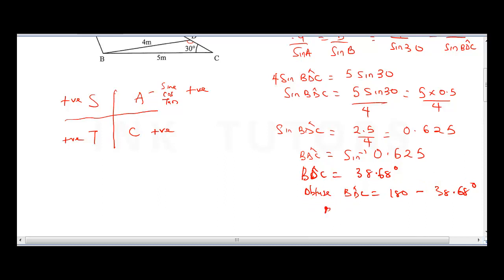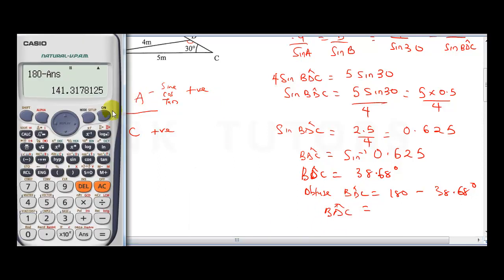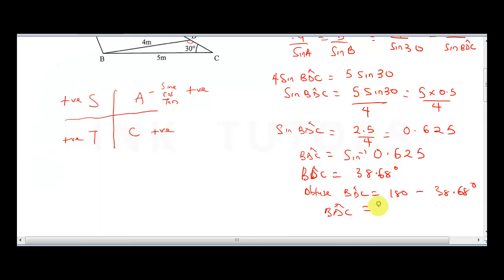Our final answer for BDC: we perform 180 minus 38.68, which gives us 141.32 degrees. So the answer is 141.32 degrees, correct to two decimal places.